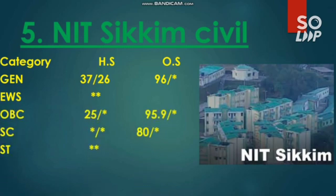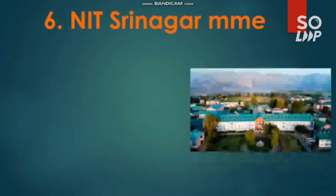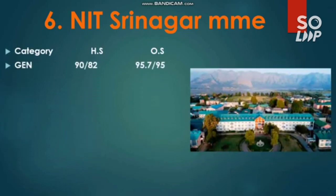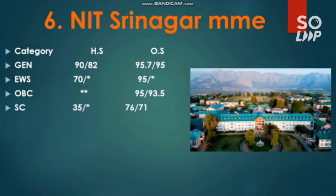For NIT Sikkim Civil Engineering, ST has no seat reserved but can compete for general seats. NIT Srinagar: Material and Mining Engineering has the lowest cutoff. For General: 95.7 and 95 percentile. EWS requires 95. OBC requires 95 and 93.5. SC requires 76 and 71 percentile. ST requires 84 percentile. Home state students can check cutoffs state-wise.